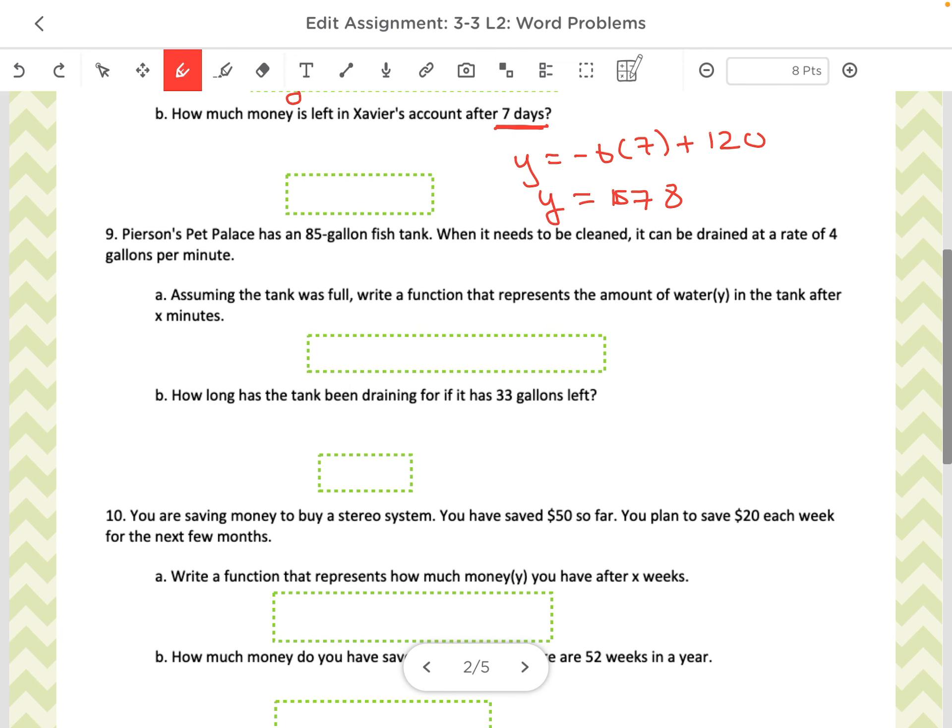Pearson's Pet Palace has an 85-gallon fish tank. When it needs to be cleaned, it can be drained at a rate of four gallons per minute. Again, that word rate is your slope. And this is how much water there was to start. So that's my y-intercept. So the amount of water is going to be, but the water is being drained. So that means it's going down. So negative 4x plus 85.